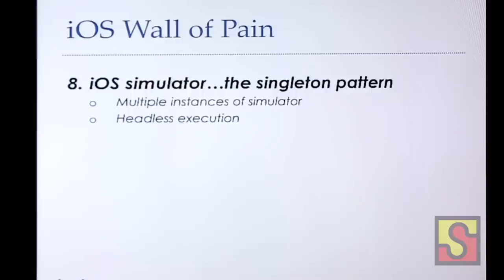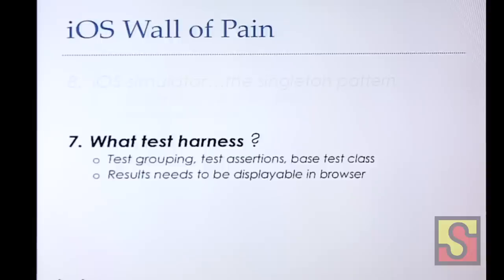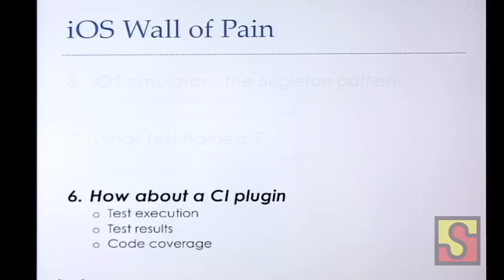For iOS, the way it's designed there's really nothing I can do. When I first started working on UI Automation I was quite surprised there's no test harness — no test grouping, assertions, or base test class. Results are in a plist file and you have to parse it to make it displayable as a JUnit report. If you write tests, you should think about CI from the very beginning — how you execute tests, display results, get code coverage. Nothing has been well integrated; a CI plugin on Jenkins would be great, similar to the Android Emulator plugin, which is highly recommended. It would be nice to see that for iOS.